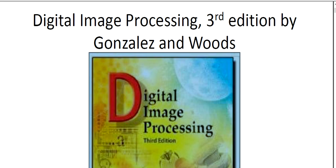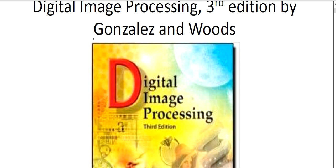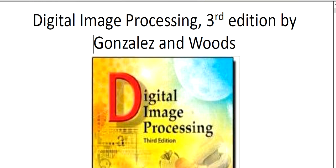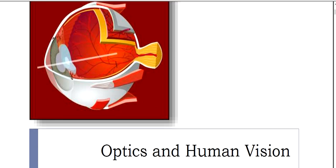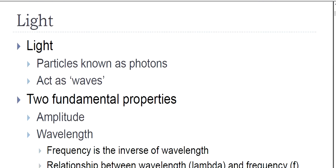For these digital image processing lectures you may consider the book 'Digital Image Processing' by Gonzalez and Woods. This is the first class and it is about optics and human vision. Optics is related to our light and human vision, so this is essentially the physics of light.